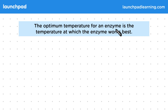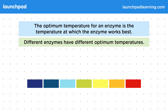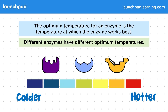The optimum temperature for an enzyme is the temperature at which the enzyme works best. Different enzymes have different optimum temperatures. This diagram shows a temperature scale — over on one end are colder temperatures, and over on the right are hotter temperatures. These enzymes are placed on the scale where their optimum temperature is, and you can see that this is different for each one.